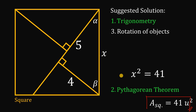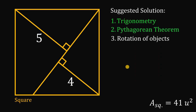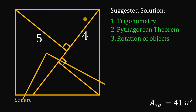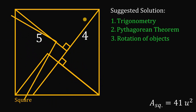How about our third solution, which is the rotation of objects? What object do we need to rotate? The answer is the right triangle. Before we rotate this right triangle, take note that these two right triangles are congruent to each other. Therefore, this side right here must also be equal to 4. Let's rotate this right triangle — first rotation, second rotation, and the last rotation.